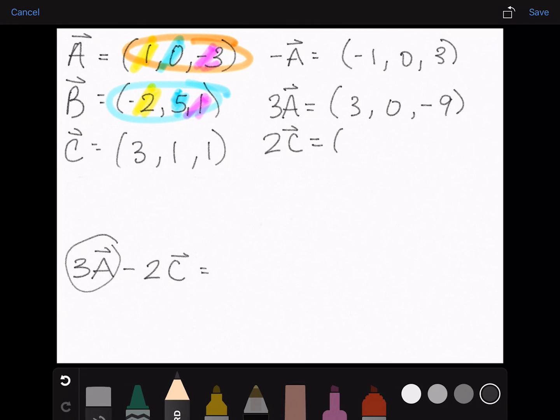will equal 6, 2, 2. Now we just use these vectors to subtract, and when we do that we'll get negative 3, negative 2, negative 11.